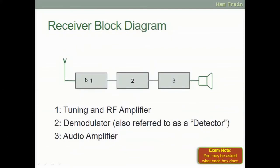Looking at the receiver block diagram: the antenna receives the signal, which goes into the tuning and RF amplifier. The signal then passes through the demodulator — also called the detector — which detects the audio signal, and sends it to the audio amplifier, which increases the volume and sends it out to the speaker or headphones. This will come up in your exam — you may be asked what each box does, or what box two does. You need to know not just the number but that it's the demodulator and what the demodulator does.